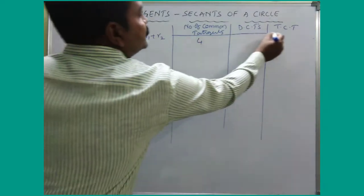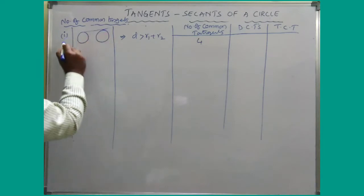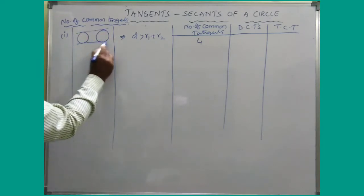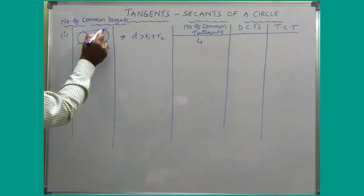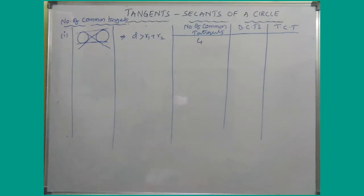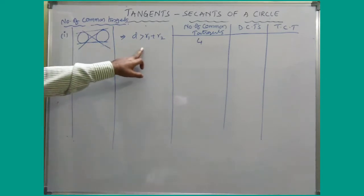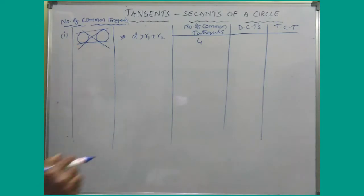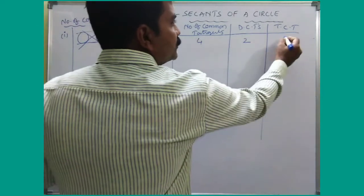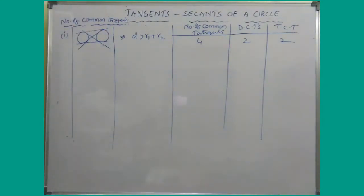Here is one tangent, one more tangent, a third one, and similarly the fourth one. So when two circles are away from each other we can draw four common tangents — two are direct common tangents and two are transversal common tangents.